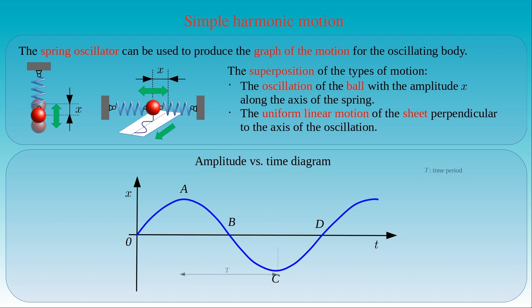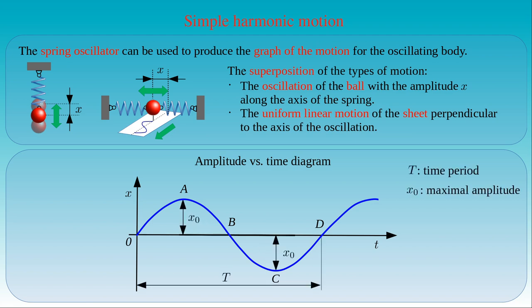The initial time is chosen such that the ball passes through its equilibrium position at the origin O and moves into the positive direction. Then it reaches the maximum value x0 at point A, and returns to its equilibrium position at point B. It passes through equilibrium, moves in the negative direction, and reaches the maximum amplitude of minus x0 at point C. At the end of the cycle it returns to its equilibrium position at point D. The oscillating ball repeats this cycle with period T again and again. Since the sine function has a period of 2π, the amplitude x is given by x0 times the sine of the ratio of 2π times time t to the period of the oscillation. This equation describes the simple harmonic or sinusoidal motion.